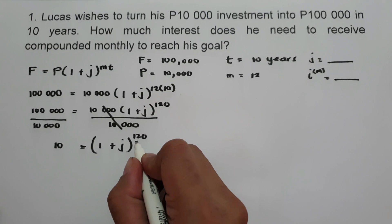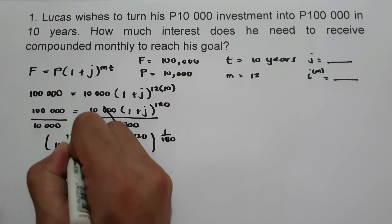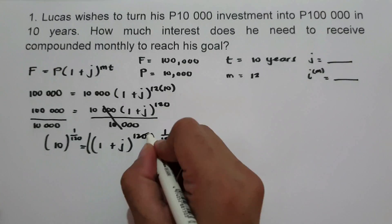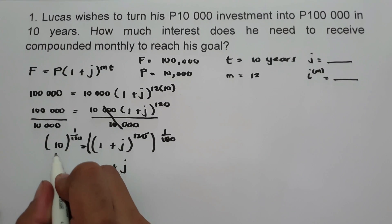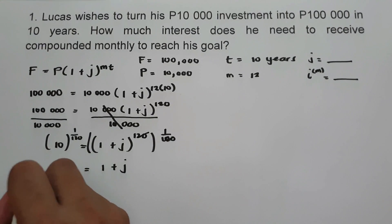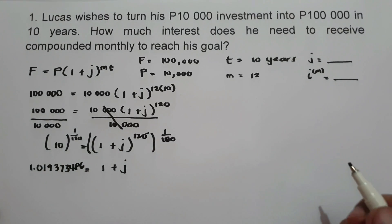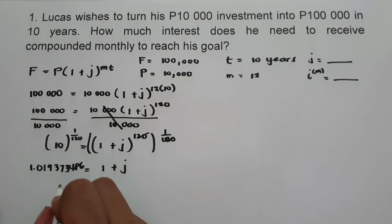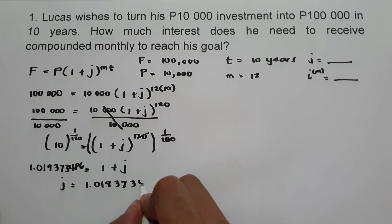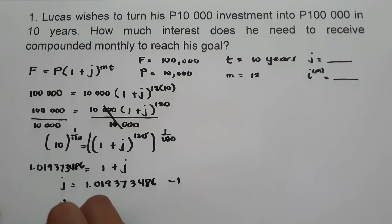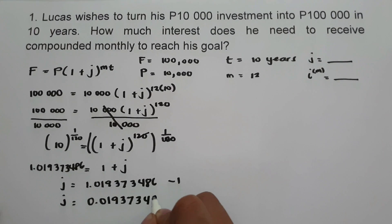To eliminate the exponent 120, let us raise both sides of the equation by 1 over 120. We are going to have 1 plus J equals 10 raised to 1 over 120, that is 1.019373486. Then we move 1 to the other side, so J equals 1.019373486 minus 1, giving J equals 0.019373486.